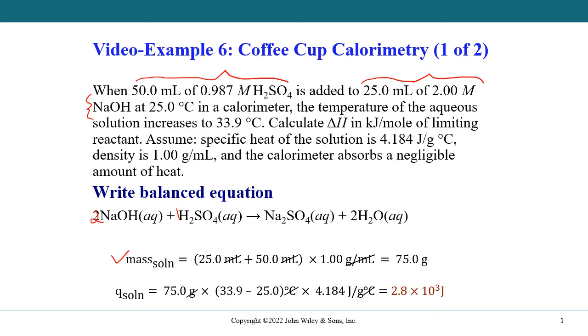We can work out the heat that is generated during this reaction by multiplying the mass multiplied by temperature change multiplied by specific heat. And we see we get 2.8 times 10 to the power 3 joules. So that is the heat absorbed by the calorimeter.